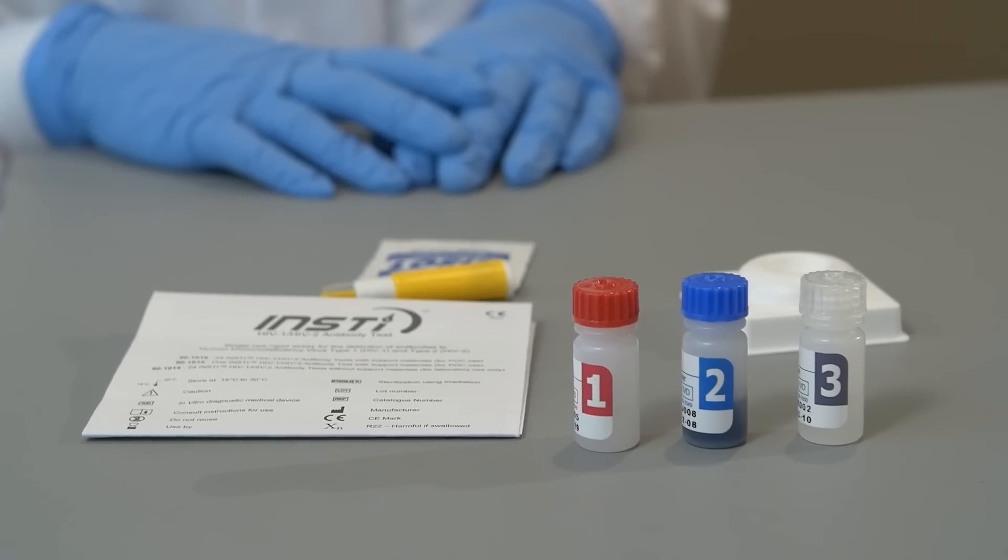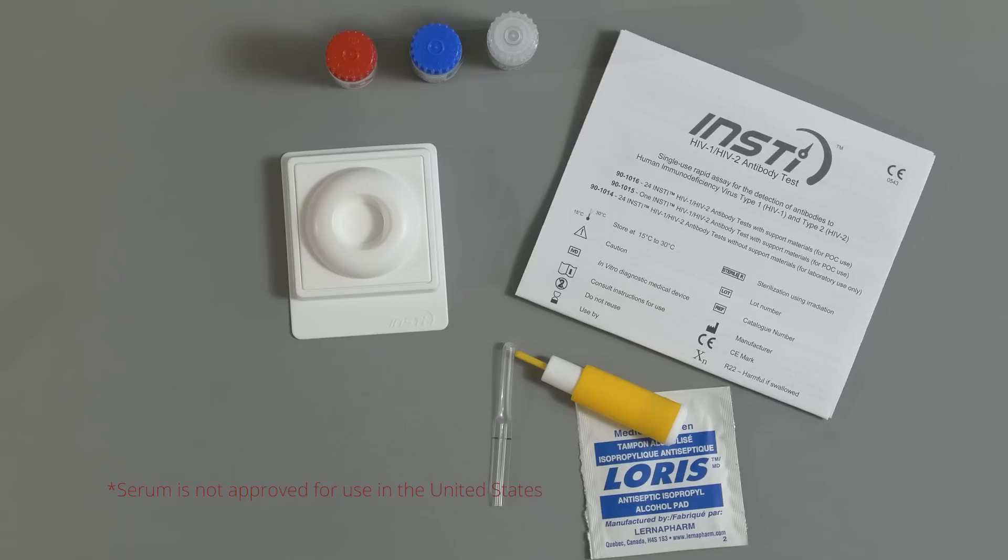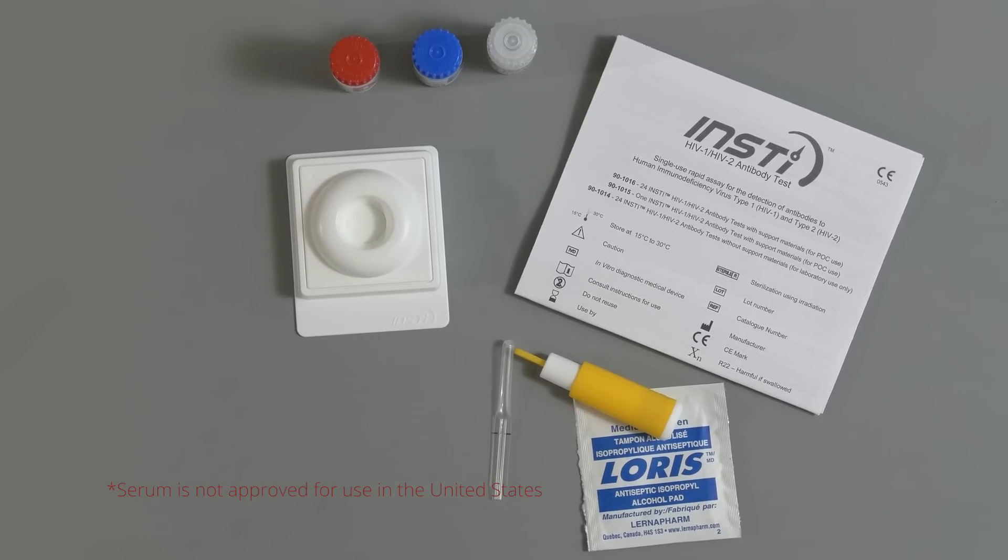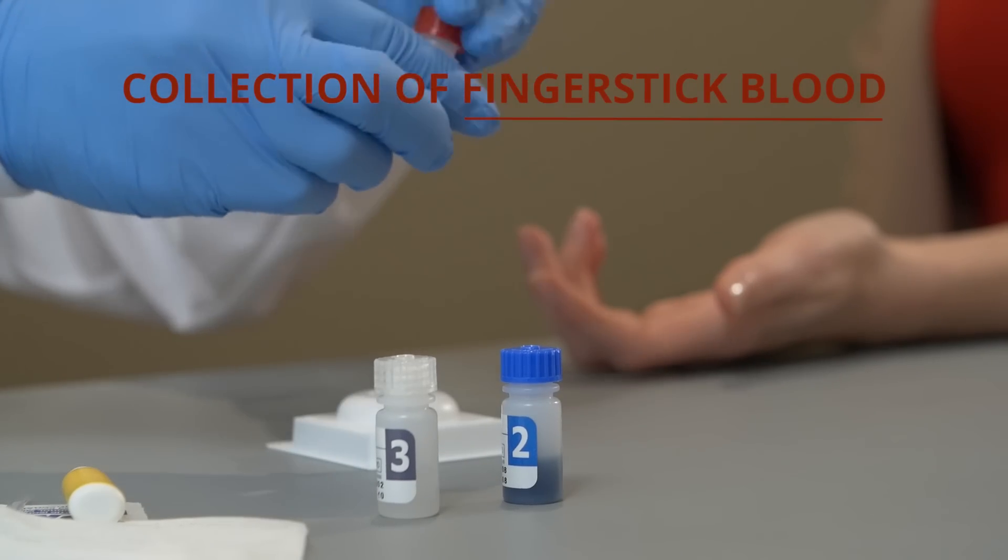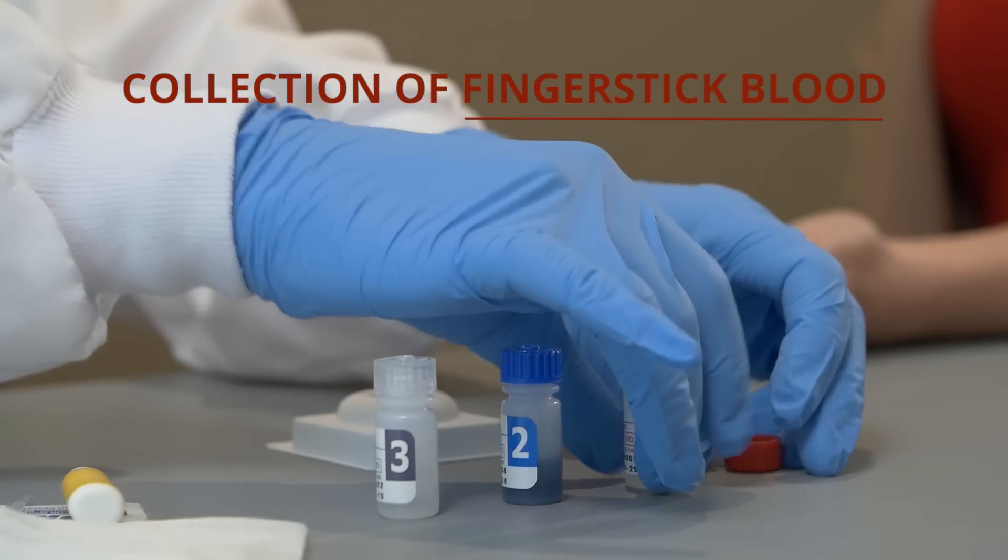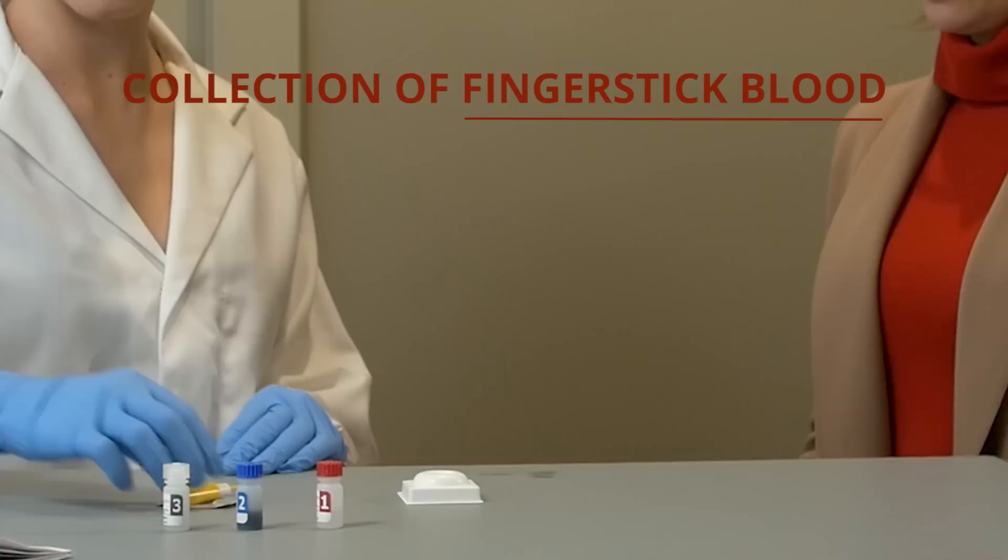INSTi can be used with finger stick blood, venous whole blood, serum specimens, and plasma specimens. First, open bottle number one, the sample diluent, and retain the cap. Do not open bottles two and three at this time.